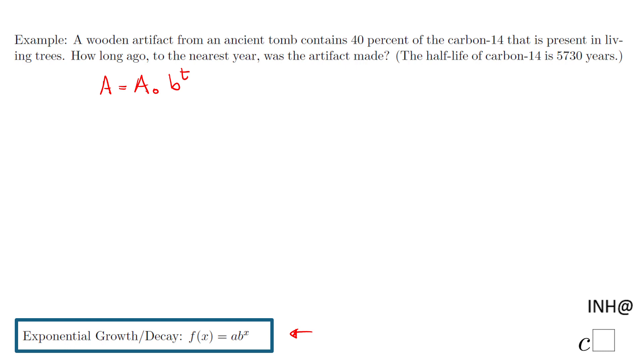My first thing here is to use this half-life time. That means if you have, for example, 100 grams, after 5730 years you have 50 grams. So we can do something like this: 50 = 100 × b^5730.